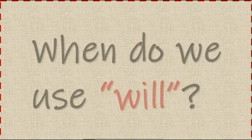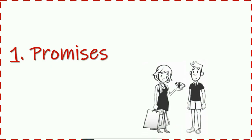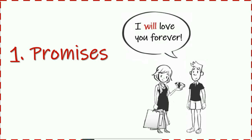The first question you're going to ask is: when do we use 'will'? The first use of the verb 'will' is with promises. In this picture, we have a man and his wife. This man promises his wife that he will love her forever, and he says: 'I will love you forever.'